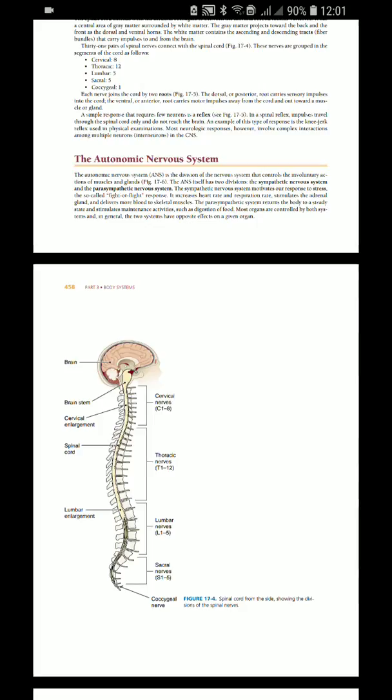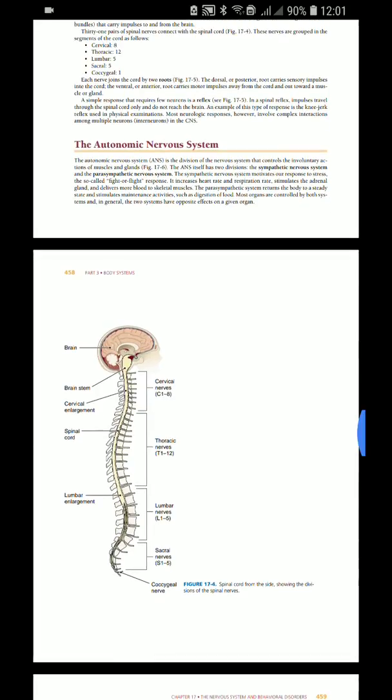This is a short duration and short distance to be traveled. An example of this type of response is the knee jerk reflex used in physical examination. Most neurological responses, however, involve complex interactions among multiple neurons, which we call interneurons in the CNS. This is a very simple part about the spinal cord. Let's discuss more in later videos.